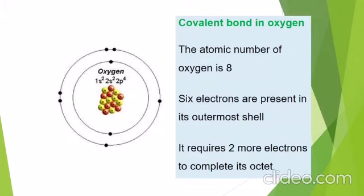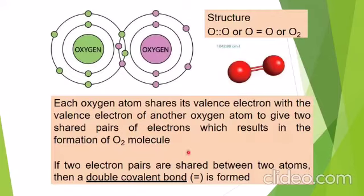Returning to the covalent bond in oxygen: oxygen has eight electrons and six electrons in the outermost shell, as we know. It requires two more electrons to complete its octet. In this way, by sharing two electrons, each oxygen atom forms a double bond between the two oxygen atoms, and the double bond is represented by two single lines lying one above another.